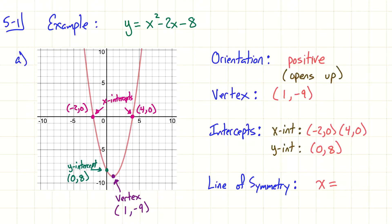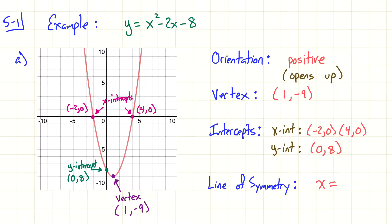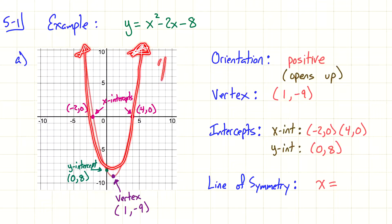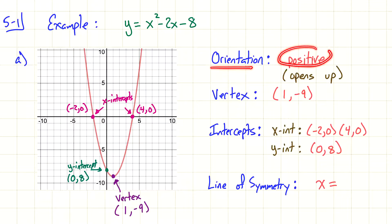Once we have the graph, it's just about finding the information. The first thing I'm looking for is orientation — how does that U-shape look? Is it facing up or facing down? In this case it looks like it's going up in both directions, so it's heading in the positive direction. We describe the orientation as being positive. Another way of describing orientation is how it opens — in this case, it opens up. The next part is the vertex. Parabolas always have a vertex, and there's only ever one — it's either at the bottom or the top. In this case, we look at the bottom. The vertex is at 1, negative 9. Make sure you know how to count the lines on the graph carefully.